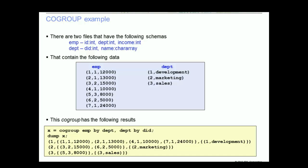I am only going to refer to a subset of the data in the example on the visual. EMP has this data: a tuple with values 1, 1, 12000; a second tuple with values 2, 1, 13000; and a third tuple with values 3, 2, 15000.